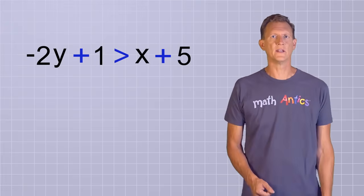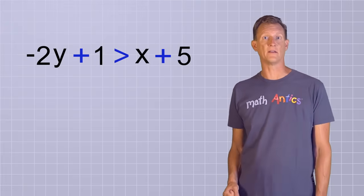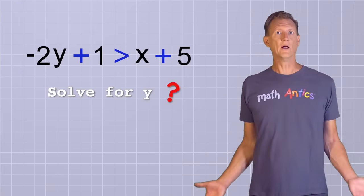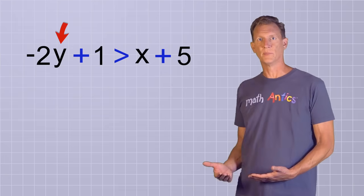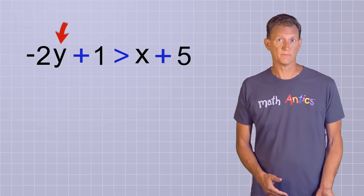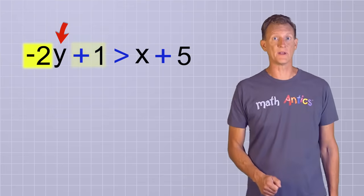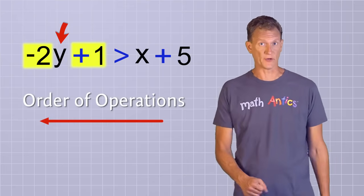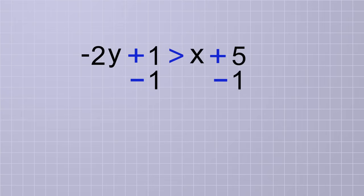For example, suppose you're given the inequality -2y + 1 > x + 5, and you need to solve it for y before you graph it. How would you do that? Well, we want to get y all by itself, but two things are currently being done to it. It's being multiplied by negative 2, and 1 is being added to that term. Let's undo those operations using order of operations in reverse. First, we'll subtract 1 from both sides. On the left side, the plus 1 and the minus 1 cancel out, leaving just negative 2y, and on the right side, the x plus 5 minus 1 simplifies to x plus 4. Notice, we didn't switch the inequality sign when we did that operation. It's still the greater than sign.